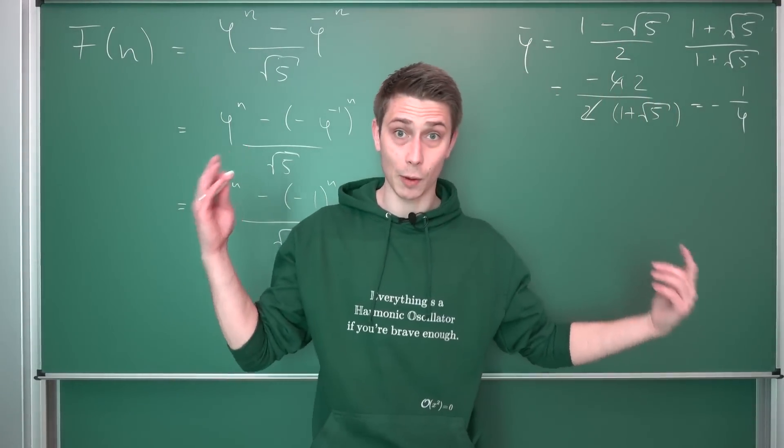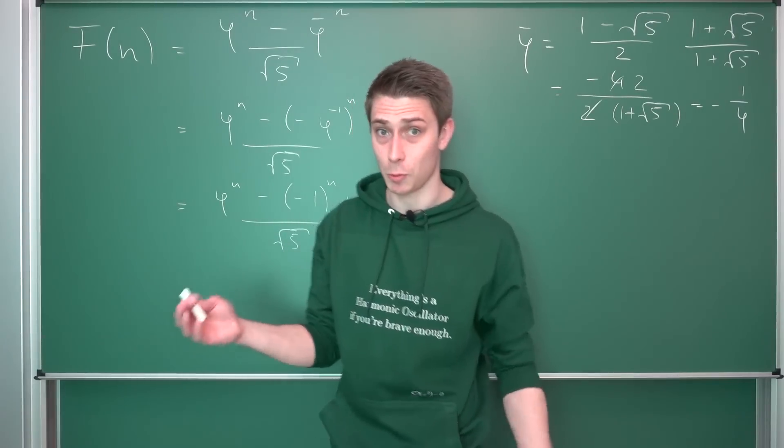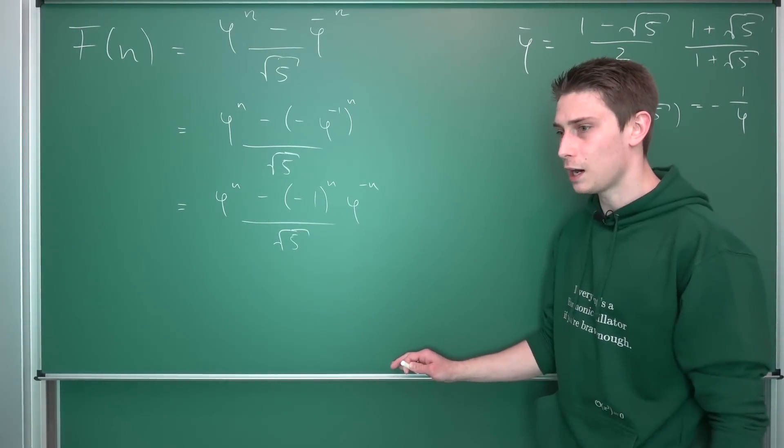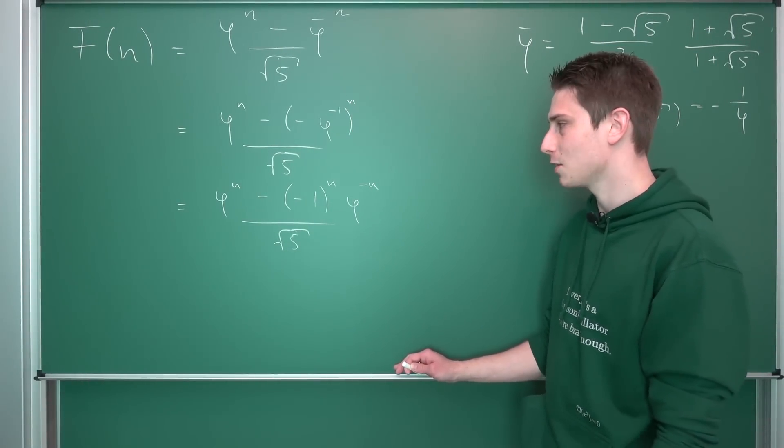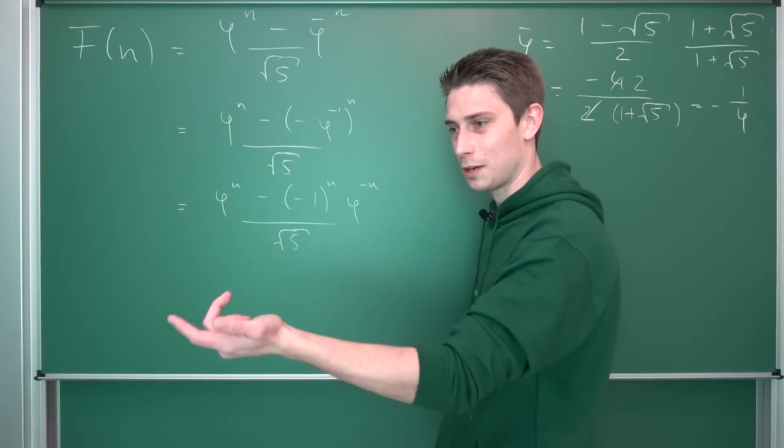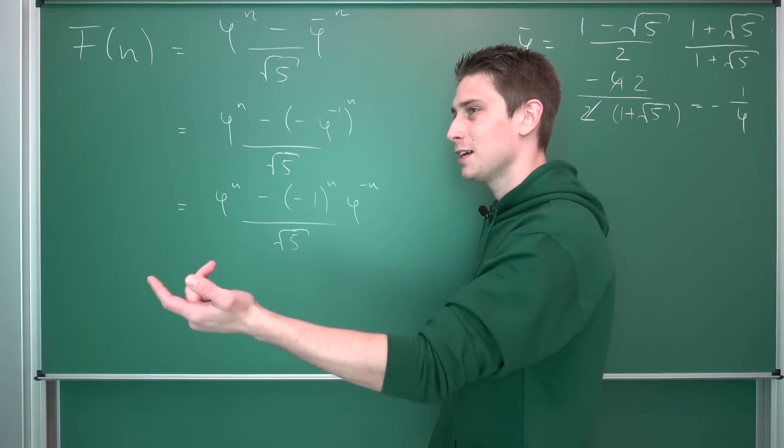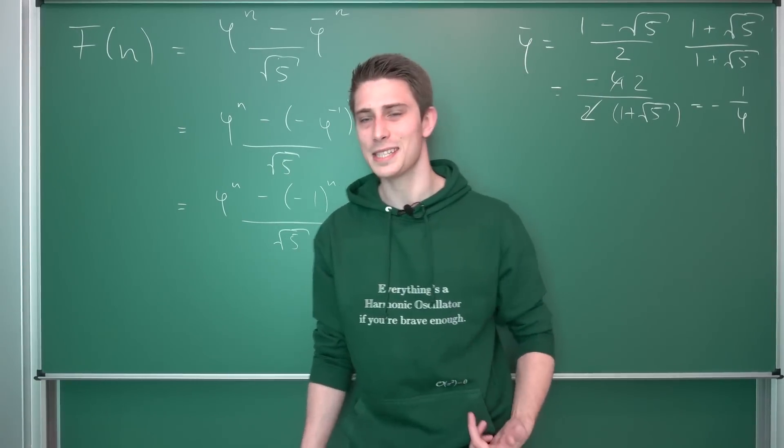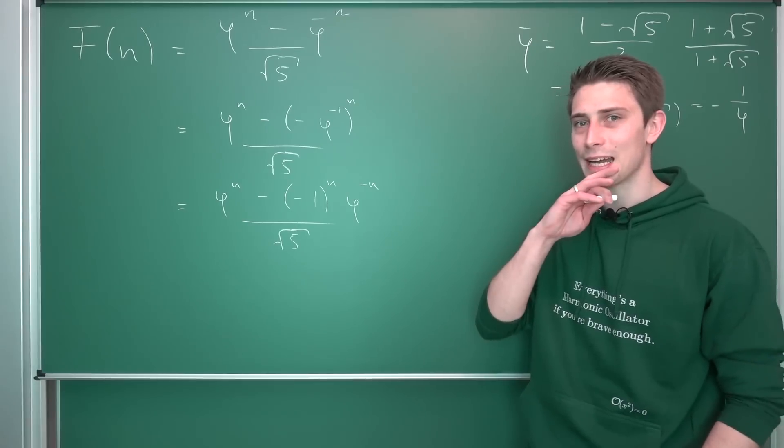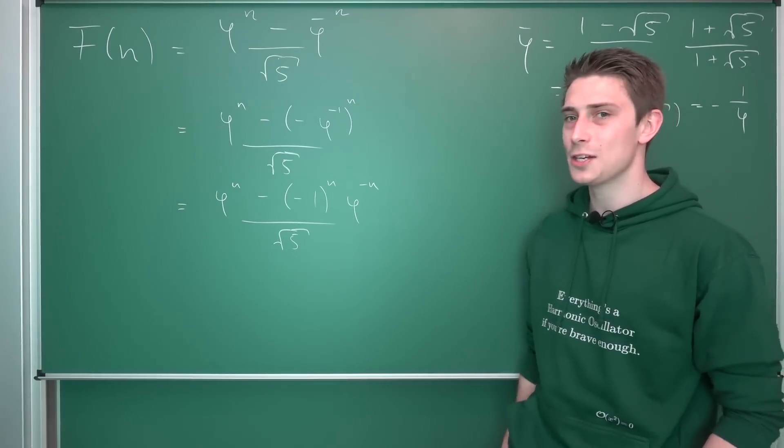But what happens if, for example, our n is 1 half? What do we want to do today? Well, 1 half, hmm, this kind of sucks. Negative 1 to the 1 half power is the square root of negative 1. That's a complex number. This is our imaginary unit i. So maybe we have to do some extension here.